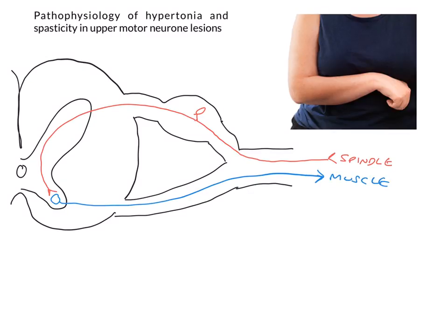When we elicit a spinal reflex, what we do is we hit the tendon of the muscle. This stretches the muscle spindles. An action potential goes through the sensory neuron all the way to the ventral horn where it synapses on the motor neuron — the lower motor neuron — and then the action potential travels down the lower motor neuron and causes the muscle to twitch. Very straightforward. Let's add on another level of detail.